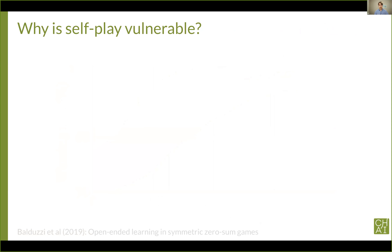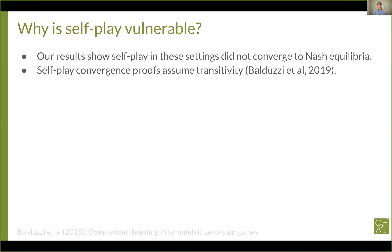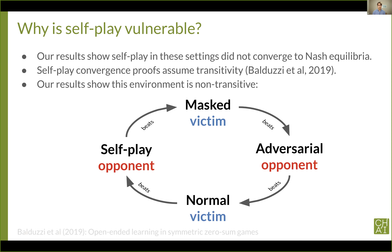Another interesting direction is to better understand why self-play produces policies vulnerable to this attack. If the learned victim and opponent are at a Nash equilibrium, an adversary cannot possibly do better than the normal opponent. Yet our adversarial policies often achieve much higher win rates despite being trained for a small fraction of the time, showing that even after billions of time steps of self-play training it still hasn't converged to Nash. One plausible reason is that self-play requires games to be transitive: if policy A beats B and B beats C, then A must beat C. In non-transitive games like Rock Paper Scissors, self-play can just cycle without improving. We've already seen non-transitivity in our environments.